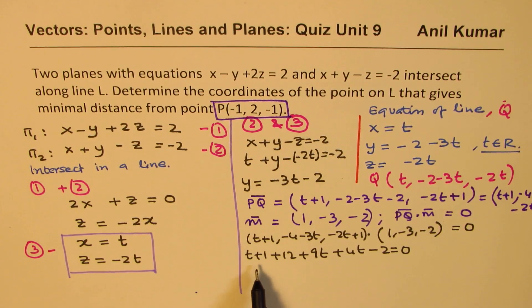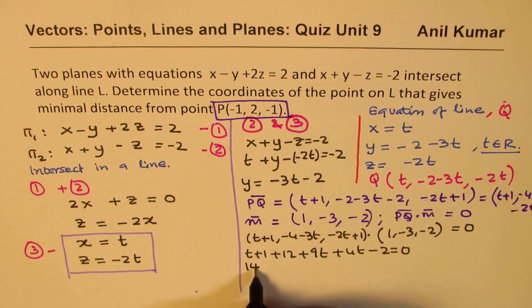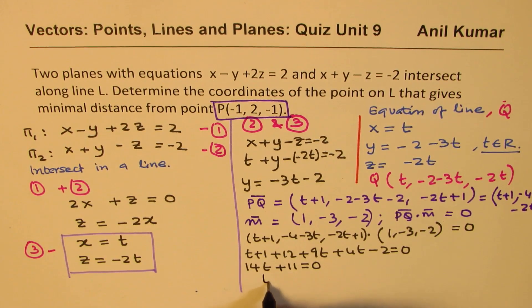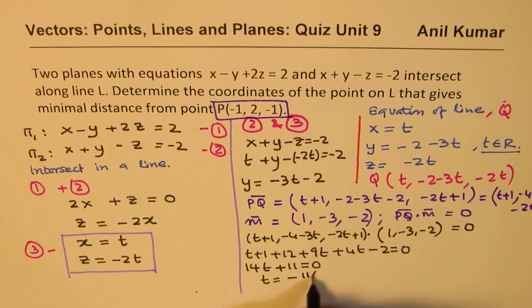Let's add this: 1 plus 9 plus 4 is 14t. Numbers: 1 plus 12 is 13, minus 2 is 11, equals 0. So t equals minus 11 by 14. We get the value of t.